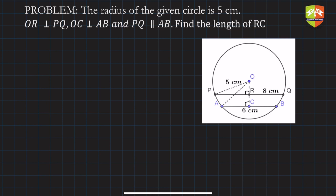What is given? The radius of the circle is equal to 5 centimeters. AB is parallel to PQ, OR is perpendicular to PQ, and OC is perpendicular to AB. It's given that AB is equal to 6 centimeters and PQ is equal to 8 centimeters.